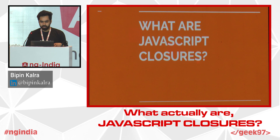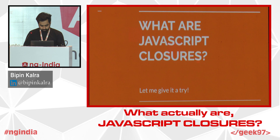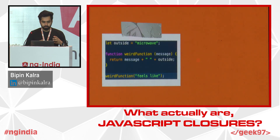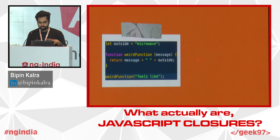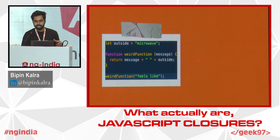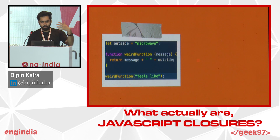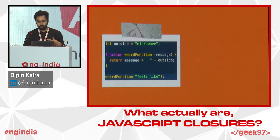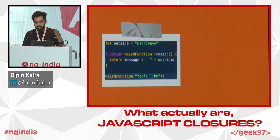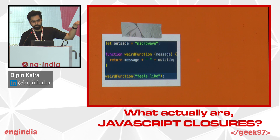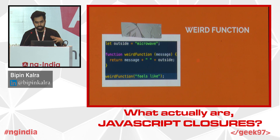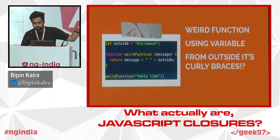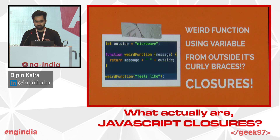Let's get to the topic because I've got a little bit of time here. What are JavaScript closures? Can everybody see there's a function there? It's a weird function because it prints a message about the outside temperature. The weird thing about this function is not what it prints — it's weird because it's using a variable from outside the curly braces. And that's closures. That's essentially what JavaScript closures are.